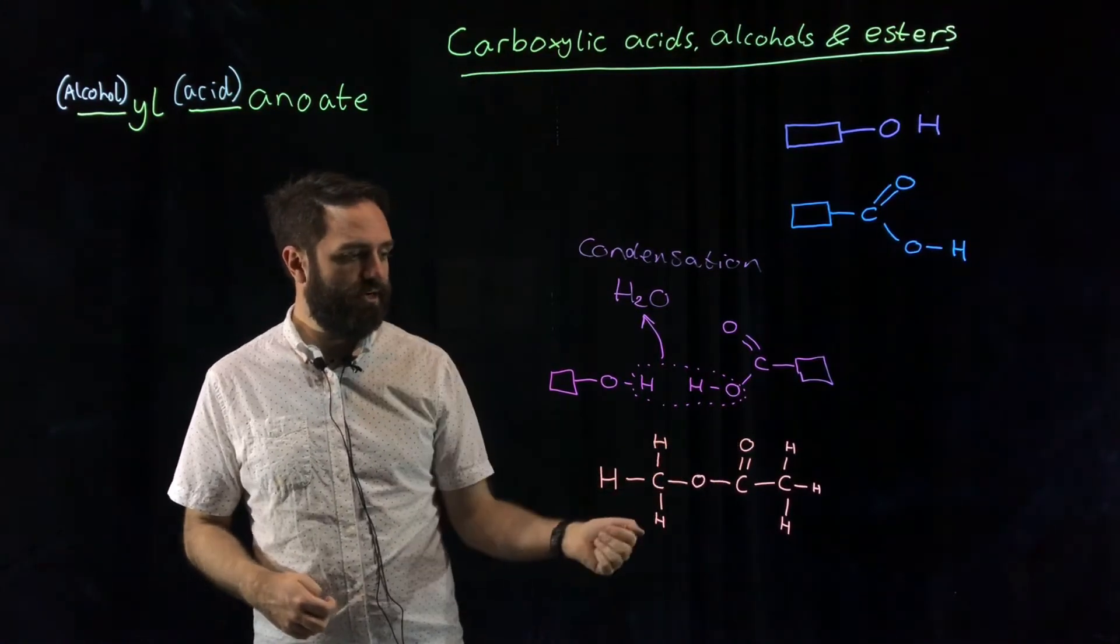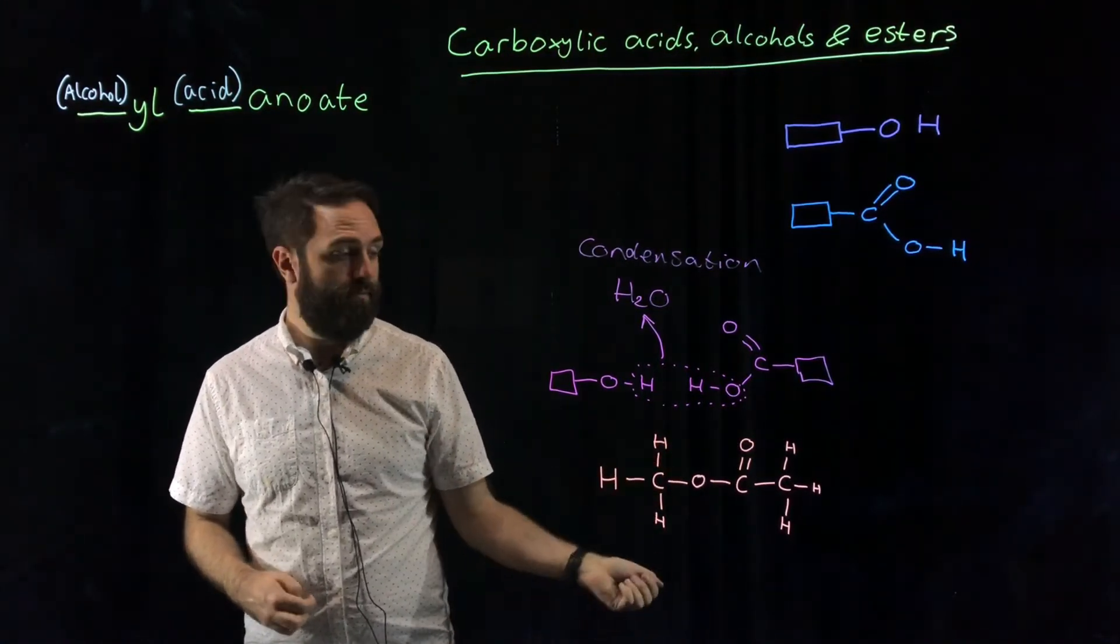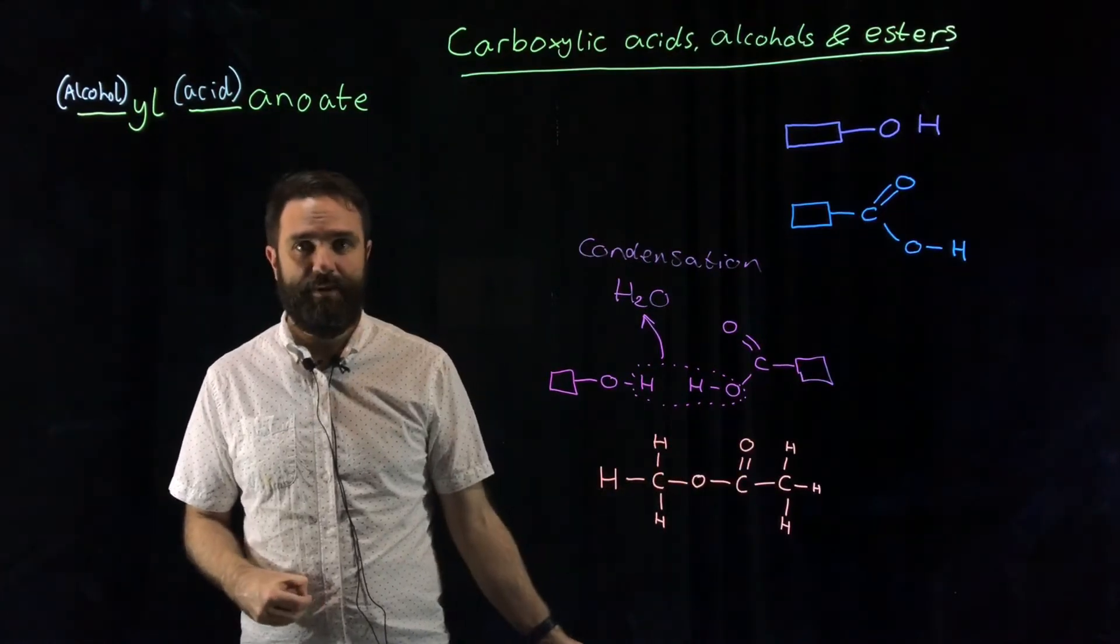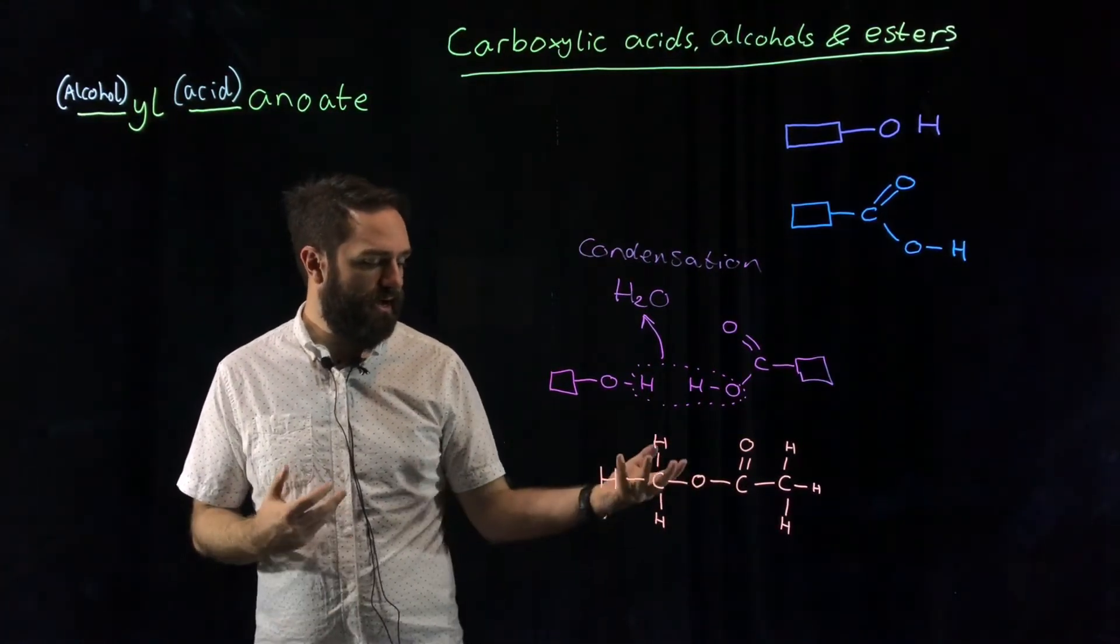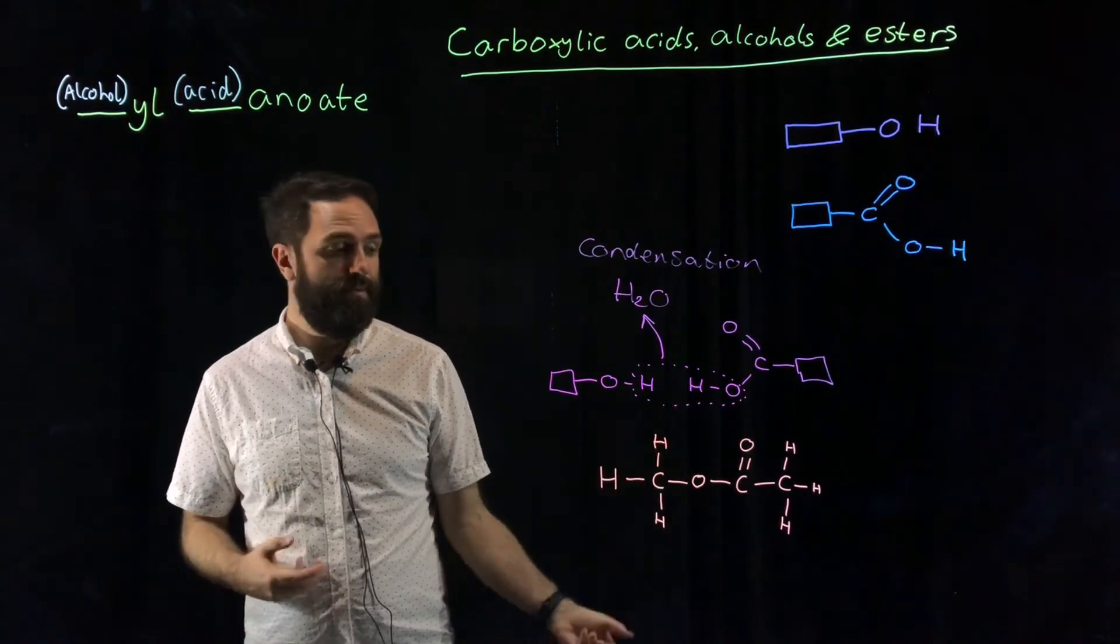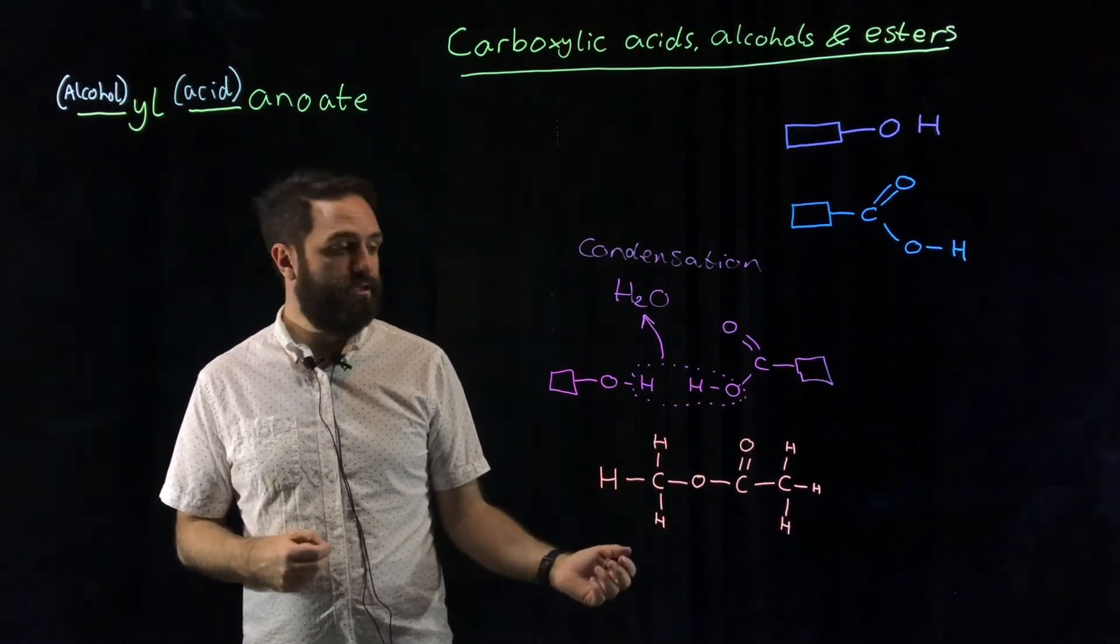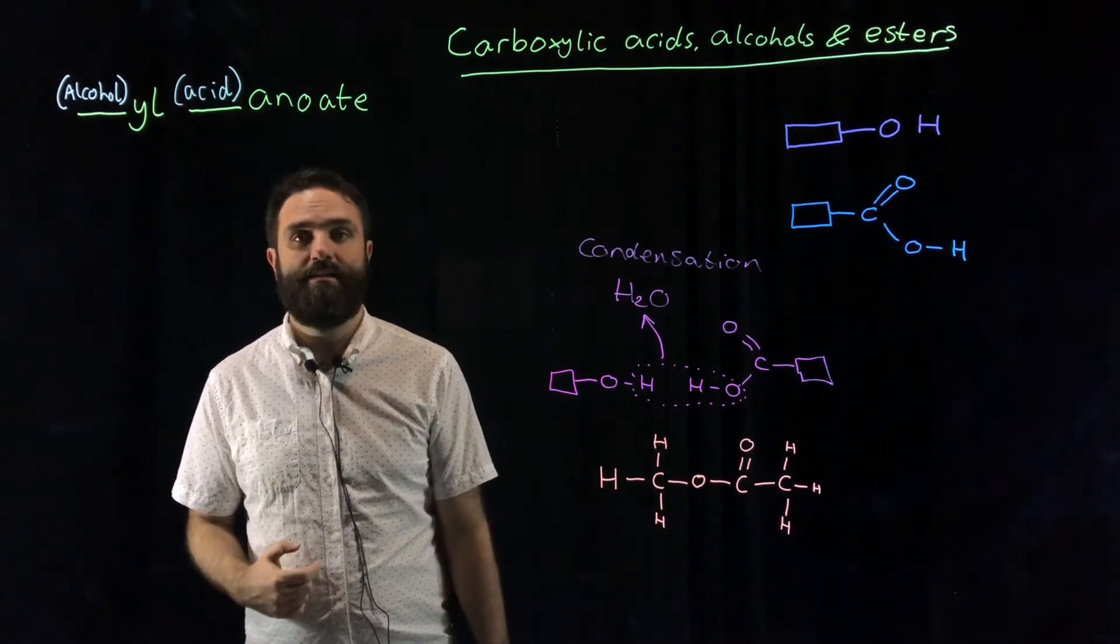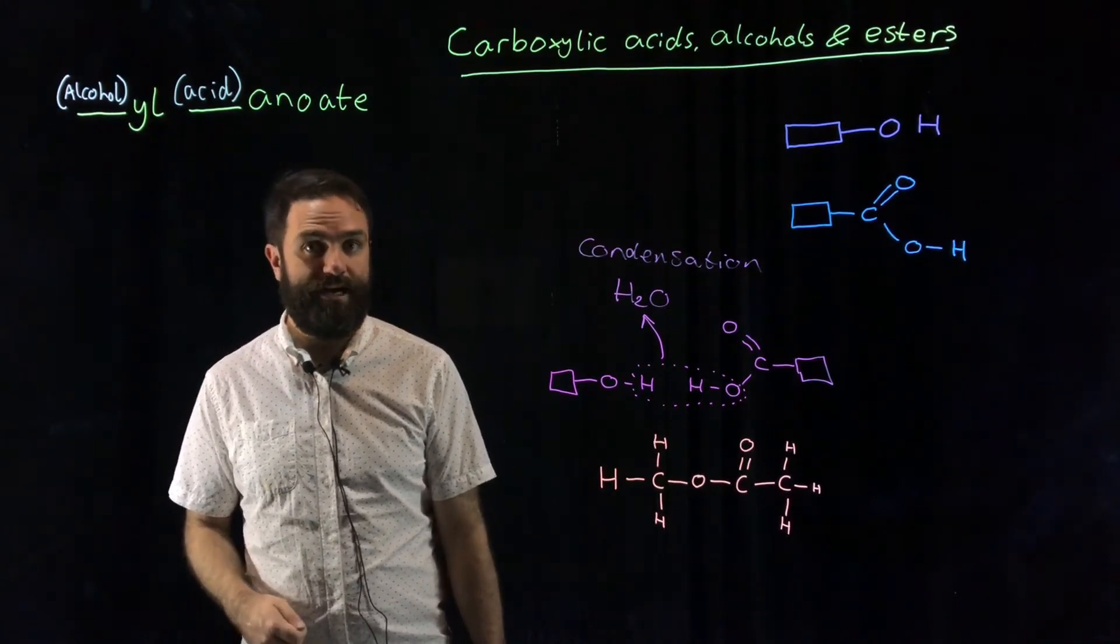So this particular example I've taken methanol and ethanoic acid and joined them together in a bond called an ester bond. Now in order to do that you need to use a catalyst. The catalyst is concentrated sulfuric acid.